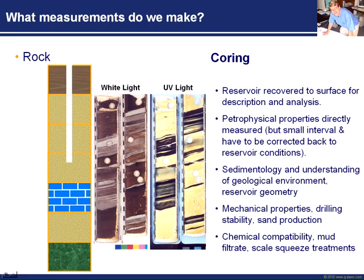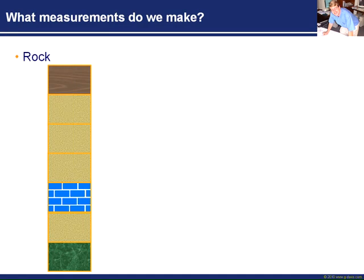So that's coring — a direct measurement. But as you can see, it's not really practical to core all of our rock. You can only get quite small sections of it. It's quite an expensive business to drill into a reservoir, stop, cut a core, come out, and go back in to cut another core. So often we just cut a few cores and get some direct measurement detail from that. But generally, we have to do some other types of measurement.